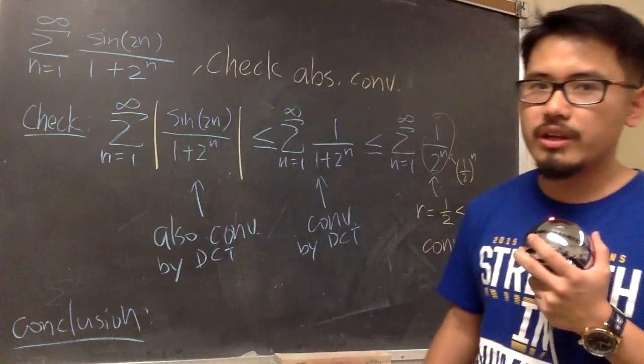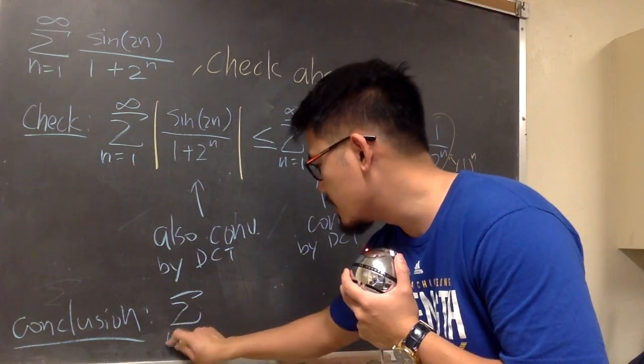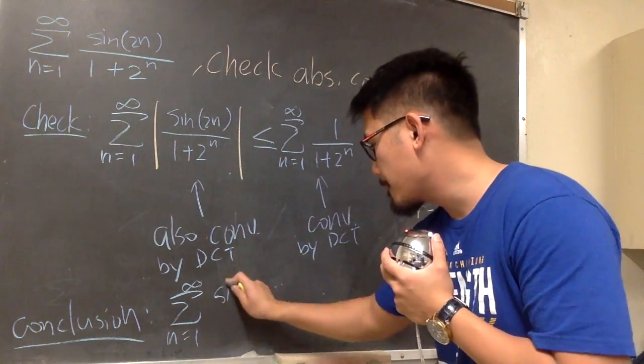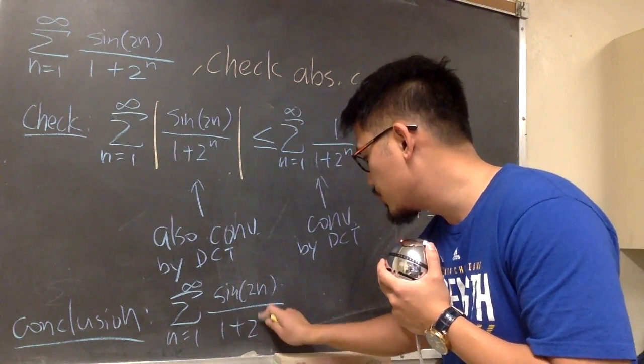So now I can just write down the final conclusion here. You always write down the conclusion and then put down the very original. And that very original is the sigma where n goes from 1 to infinity sine of 2n over 1 plus 2 to the n.